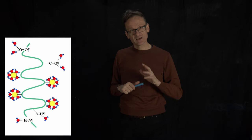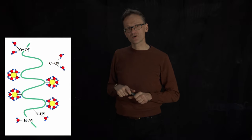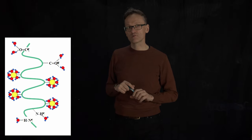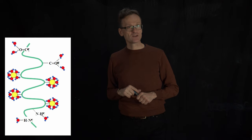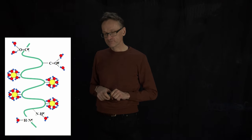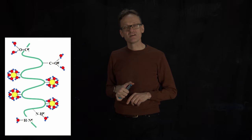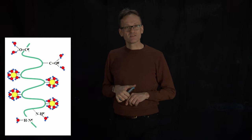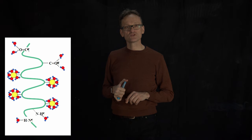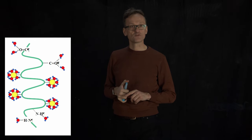Those side chains, as we will see later, are going to have slightly different properties. Some of them are going to like water — the so-called hydrophilic ones. Others are not going to like water — hydrophobic, or water-fearing. What I've drawn here is a highly schematic part where the yellow region corresponds to side chains that would be hydrophobic.